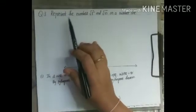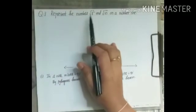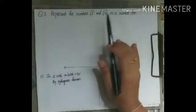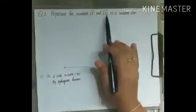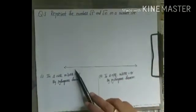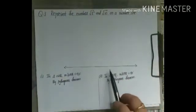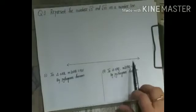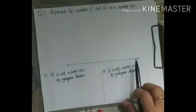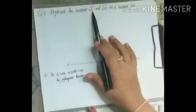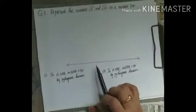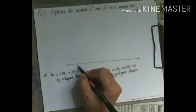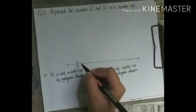Number 3: represent the numbers √5 and √10 on a number line. These are irrational numbers; we can't simply mark them on the number line the way we do rational numbers. For irrational numbers we have to construct them. Take O as the origin.